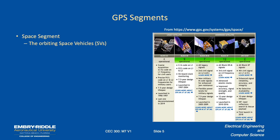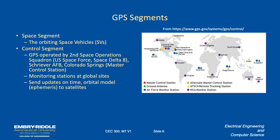As you go to later block releases there are increased functionalities: encoded military signals, the new civilian signals L2C and L1C, and a new civil navigation code replacing the legacy navigation message we'll discuss later. The control segment is the ground-based segment; GPS is run at Schriever Air Force Base by the 2nd Space Operations Squadron, part of Space Delta 8 within the new Space Force — which is a segment of the Air Force in a similar way that the Marine Corps is part of the Navy.